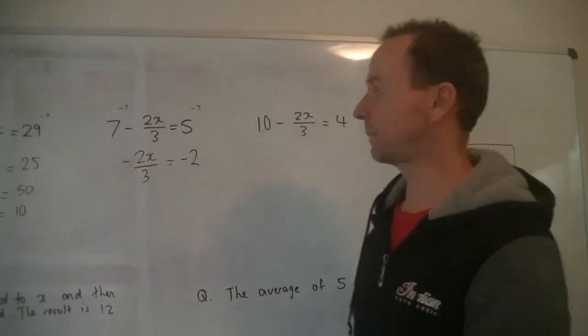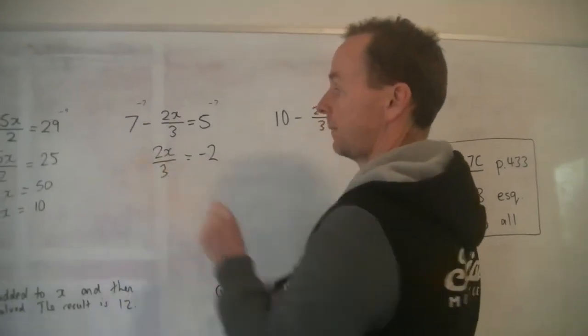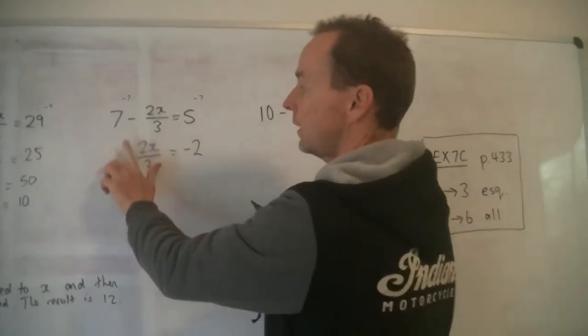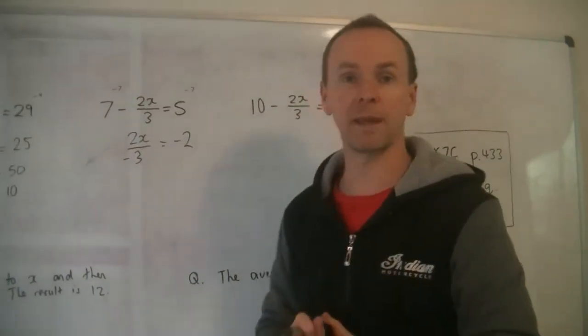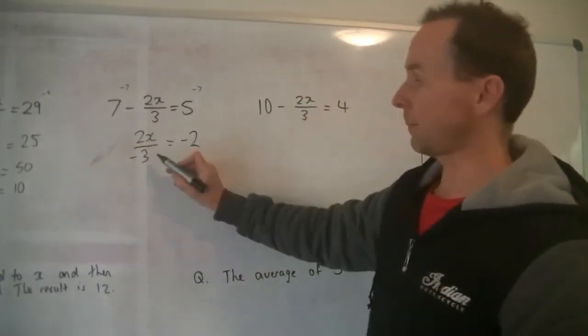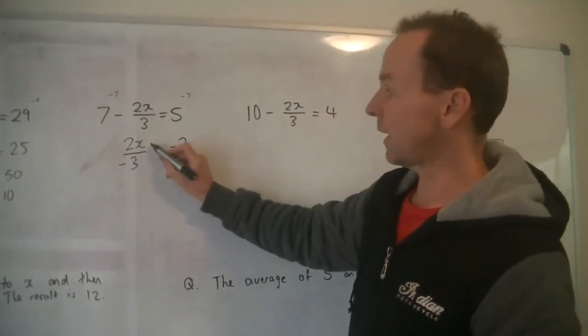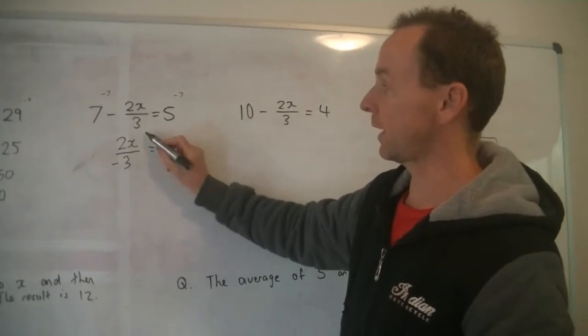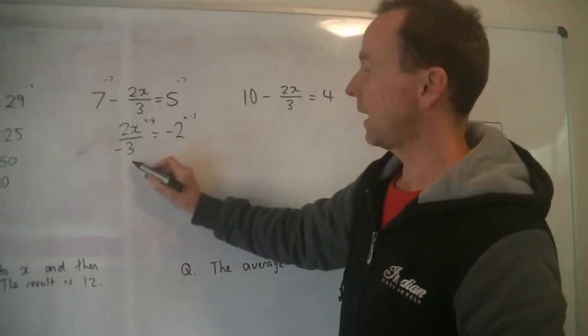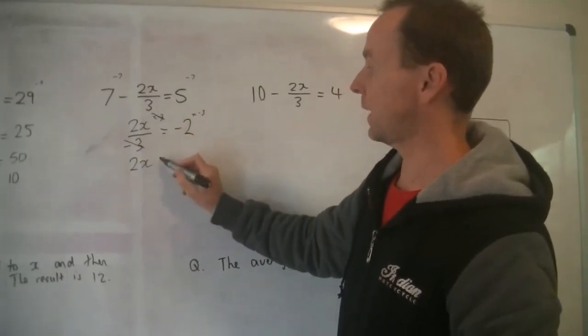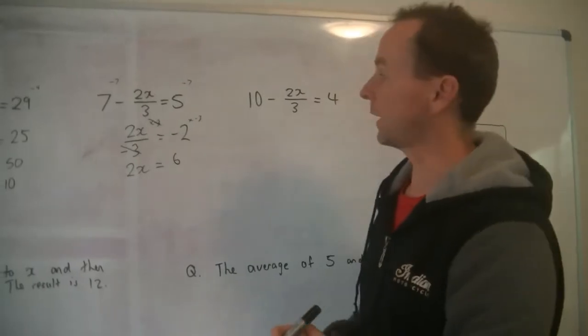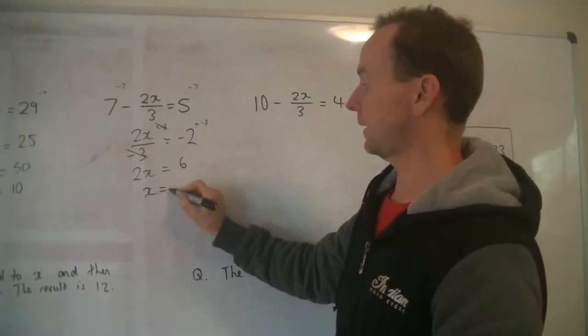Now I need to explain something. This negative here could be, it's the same as having, you could have a negative out the front, you could have just one negative on the top line, or you can put that negative on the bottom line. It makes no difference. They are all equal to each other, as long as that whole fraction only has one negative sign. So I'm going to put the negative on the bottom line like that. So now what I'm going to do is multiply both sides by negative 3. So I times this side by negative 3 and I times that side by negative 3. And the reason why I'll do that is they'll cancel, and I'm left with 2x equals negative 2 times negative 3 is positive 6. So I've got rid of that negative sign. And now I just divide both sides by 2, and you get x equals 3.